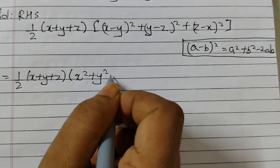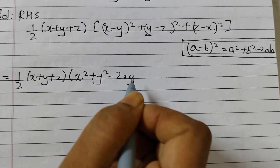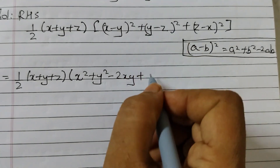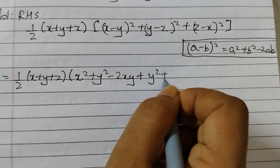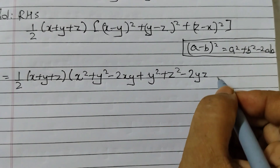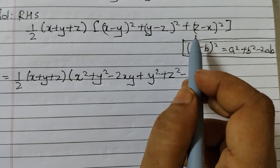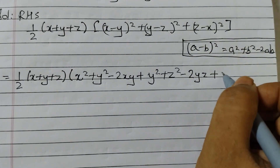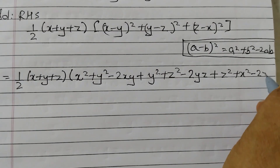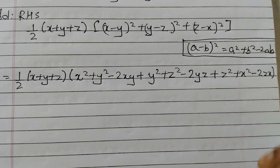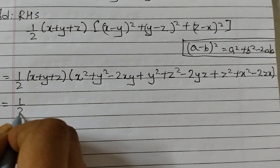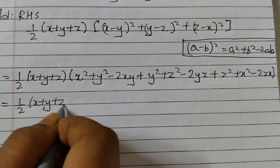So x squared plus y squared minus 2xy, using this identity, plus y minus z whole squared gives y squared plus z squared minus 2yz. Now we will open up the last bracket, so that's z squared plus x squared minus 2zx, equals to 1 by 2 into x plus y plus z.